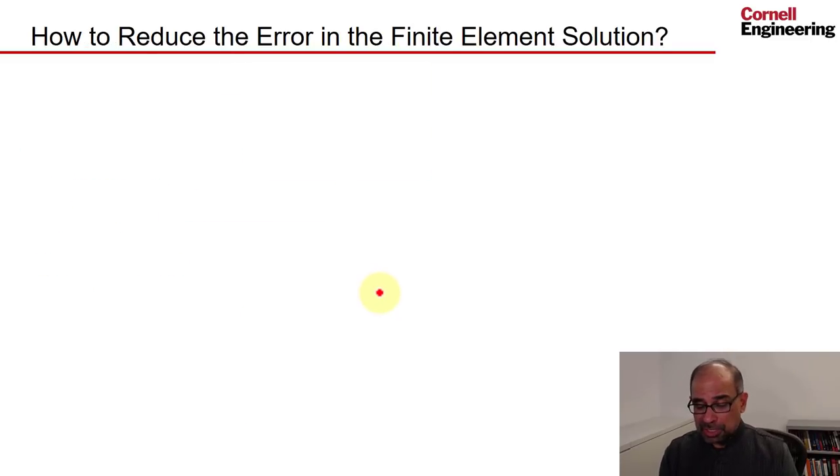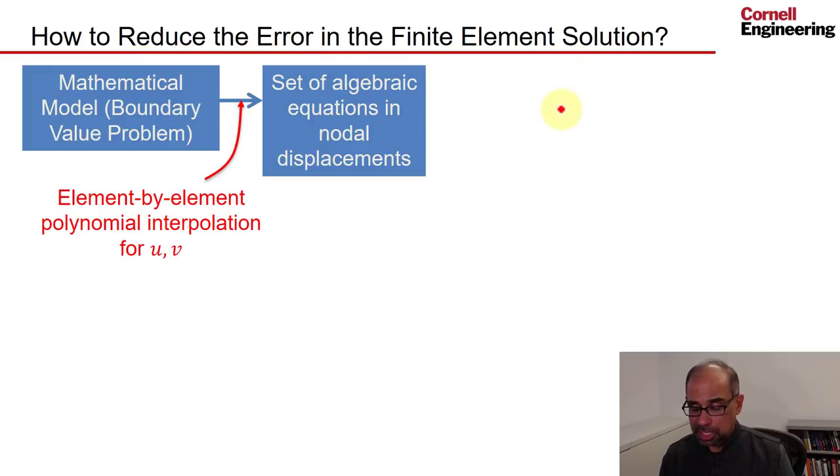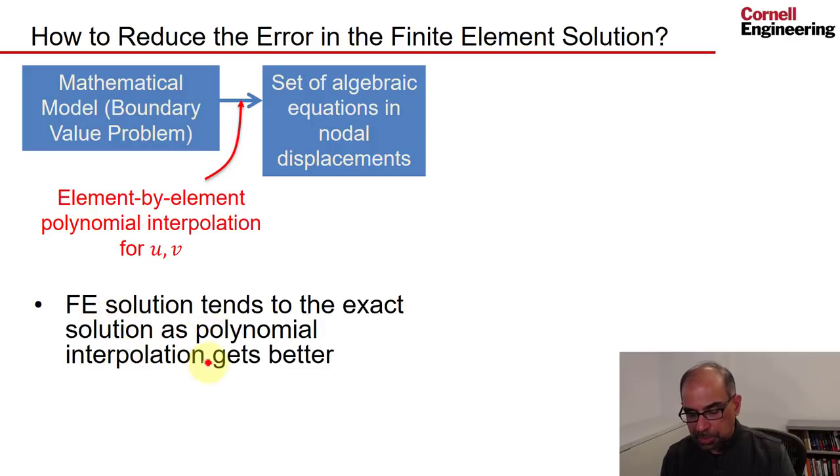As the user, the most important thing we are concerned about is how to reduce the error in the finite element solution. Because in going from the boundary value problem to a set of algebraic equations, you're introducing a numerical error. Now, since this process is done through that element-by-element polynomial interpolation, the level that you have to decrease the error is that polynomial interpolation. So as the polynomial interpolation gets better, the finite element solution tends to the exact solution. So we have to think about how we can make the polynomial interpolation better.